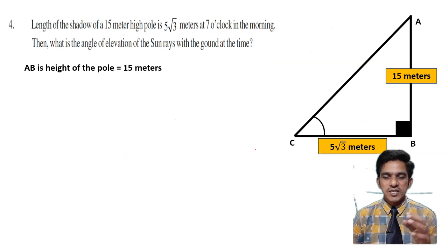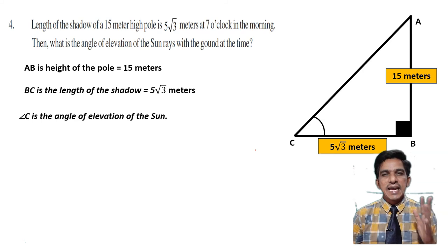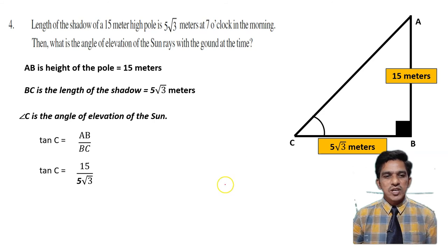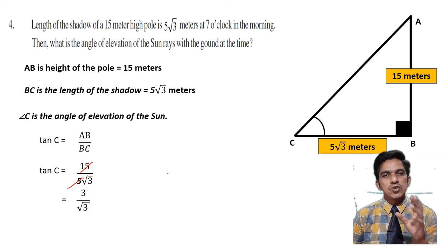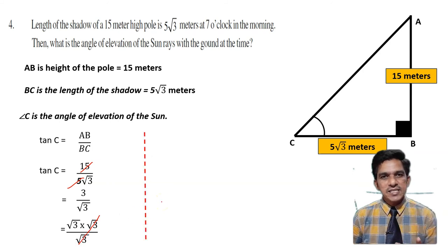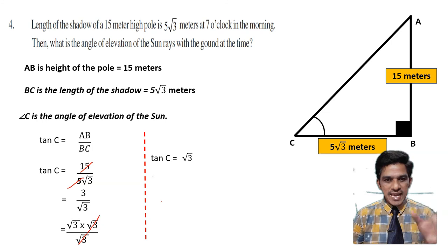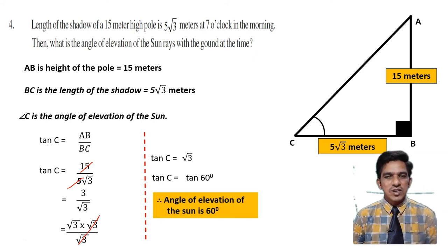AB is the height of the pole, 15 meters. BC is the length of the shadow, 5 root 3 meters. Angle C is the angle of elevation of the sun — that is what we calculate. Tan C equals opposite by adjacent, AB by BC, which is 15 by 5 root 3, simplifying to 3 by root 3. Writing 3 as root 3 into root 3, we get root 3 into root 3 by root 3, and the root 3 cancels, giving tan C equals root 3. Since tan 60 equals root 3, the angle of elevation of the sun rays is 60 degrees.